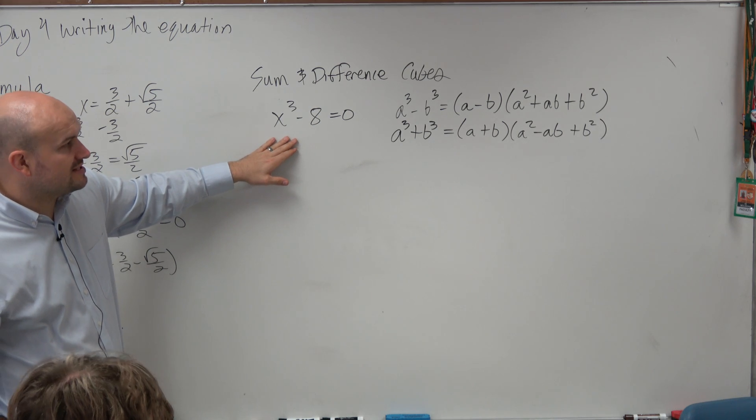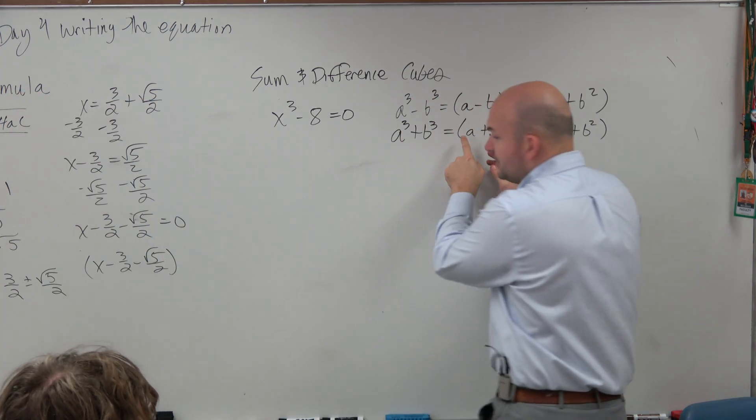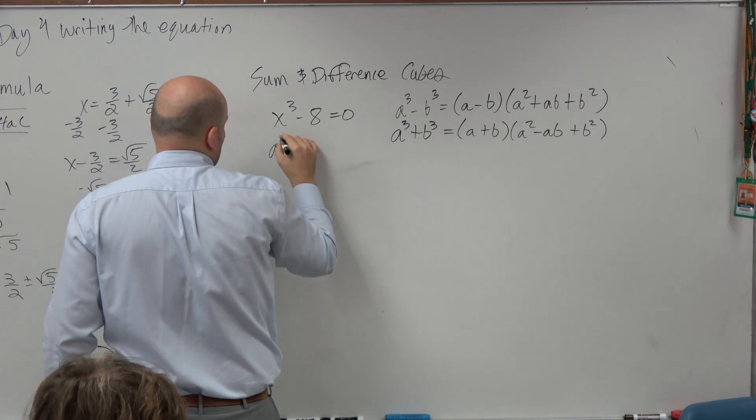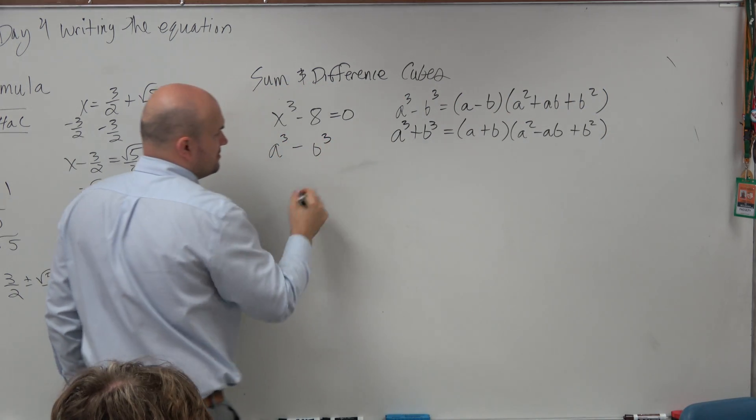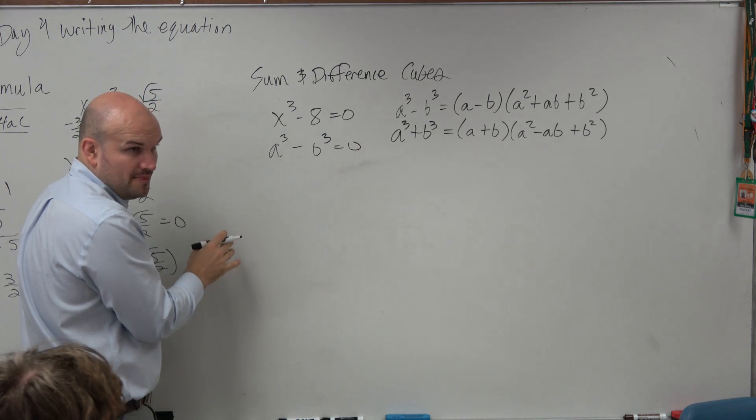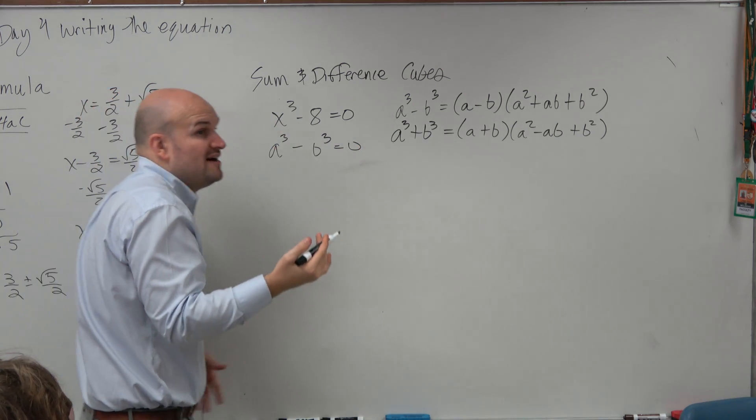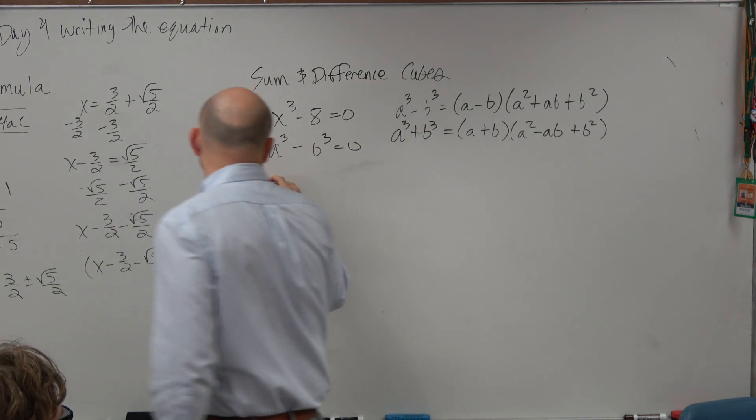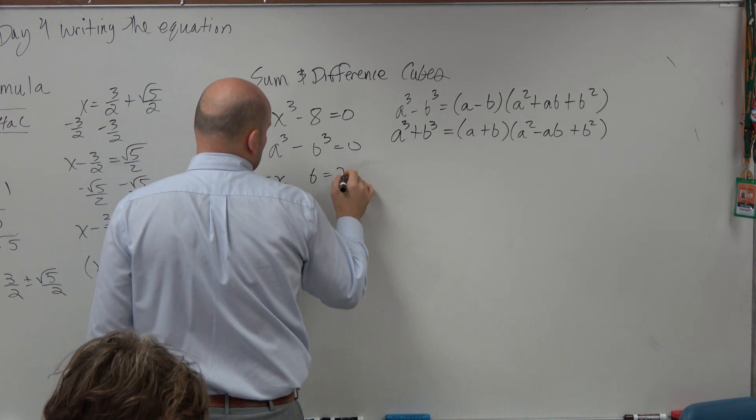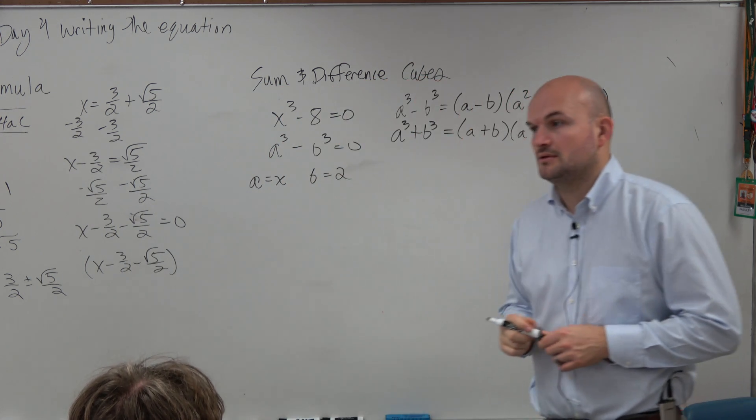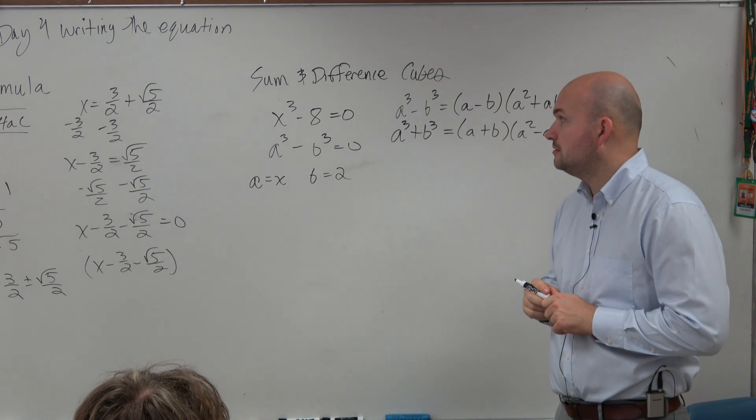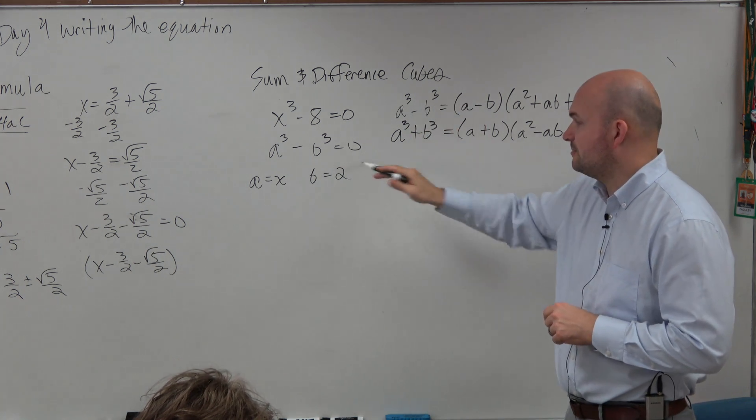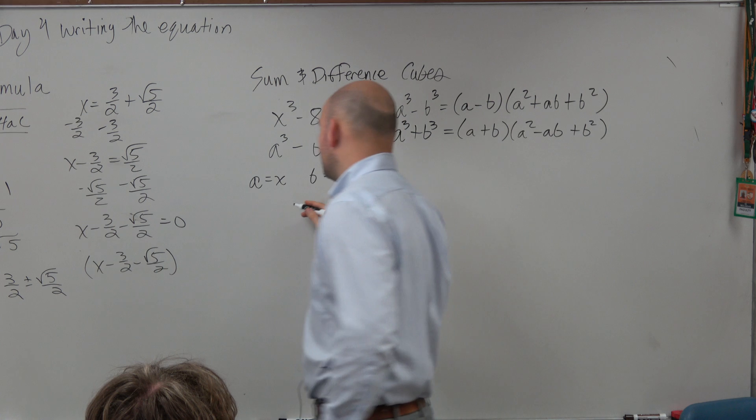So if I wanted to factor this down, we've got to figure out what a and b is. Right now, this is a cubed minus b cubed. Would you guys agree with me? So therefore, we could say, basically to find a and b, we just need to take the cube root of the first and the second term. So we could say a is equal to x, b is equal to 2. And again, it's just a cubed minus b cubed, so don't really worry about the negative in there.